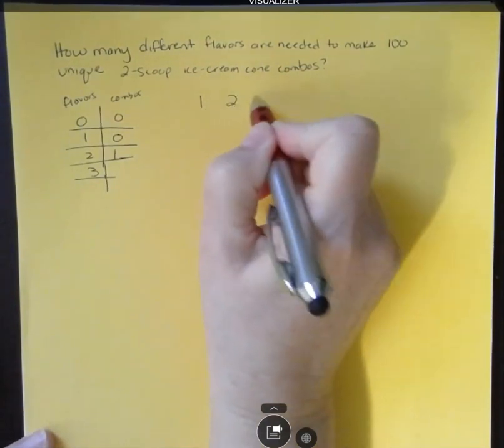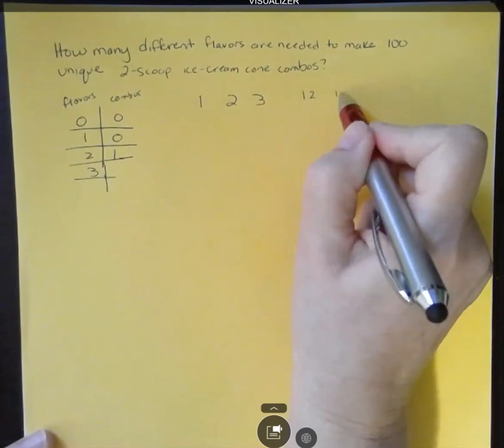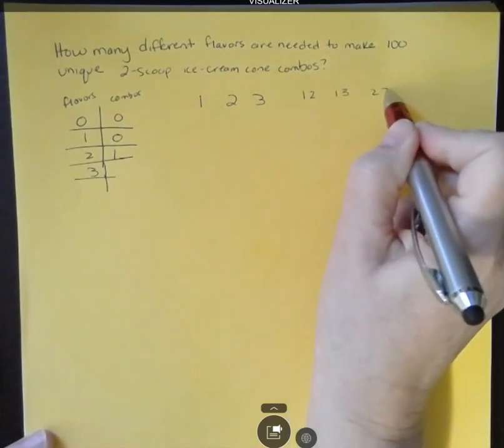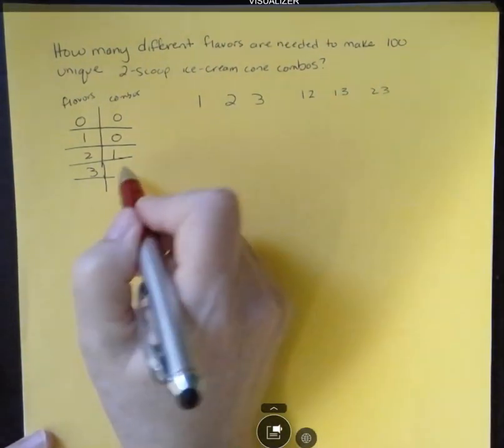What if I had three? Well, if I had three, let's call them one, two, and three. I could say one and two. Or I could say one and three. Or I could say two and three. Those are the three ways I could make an ice cream cone with three. So that's three different ways.